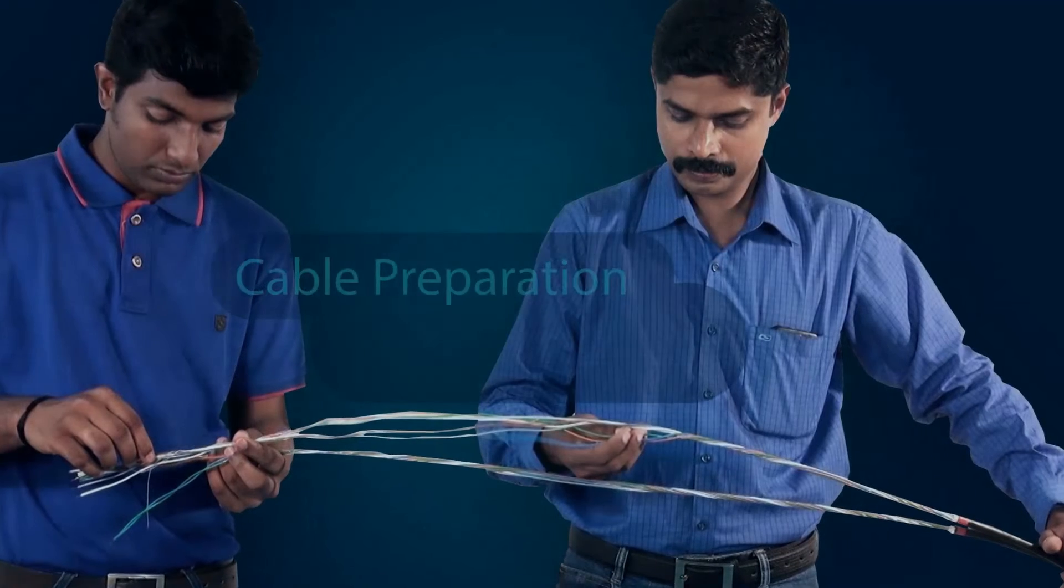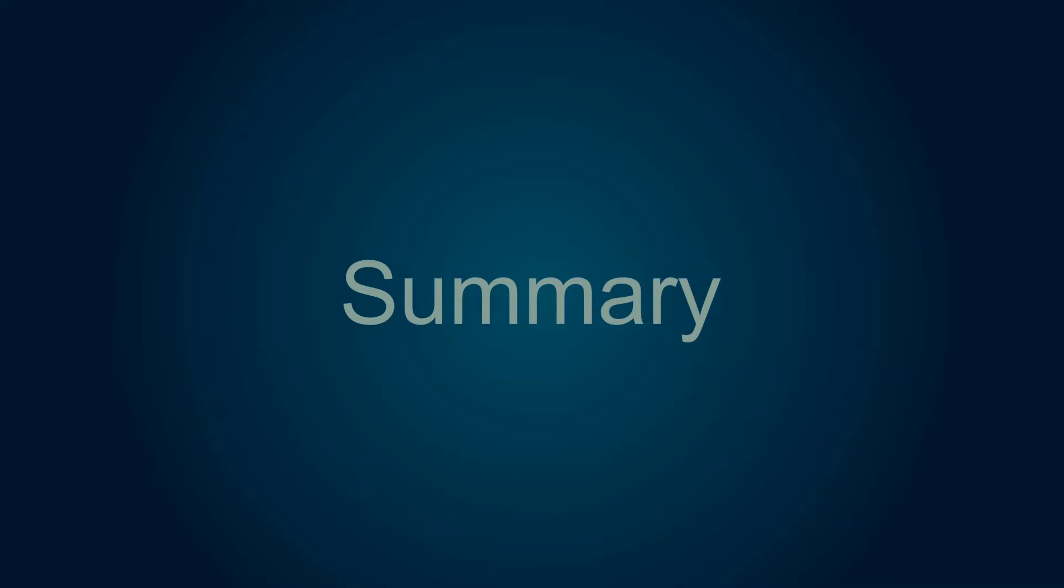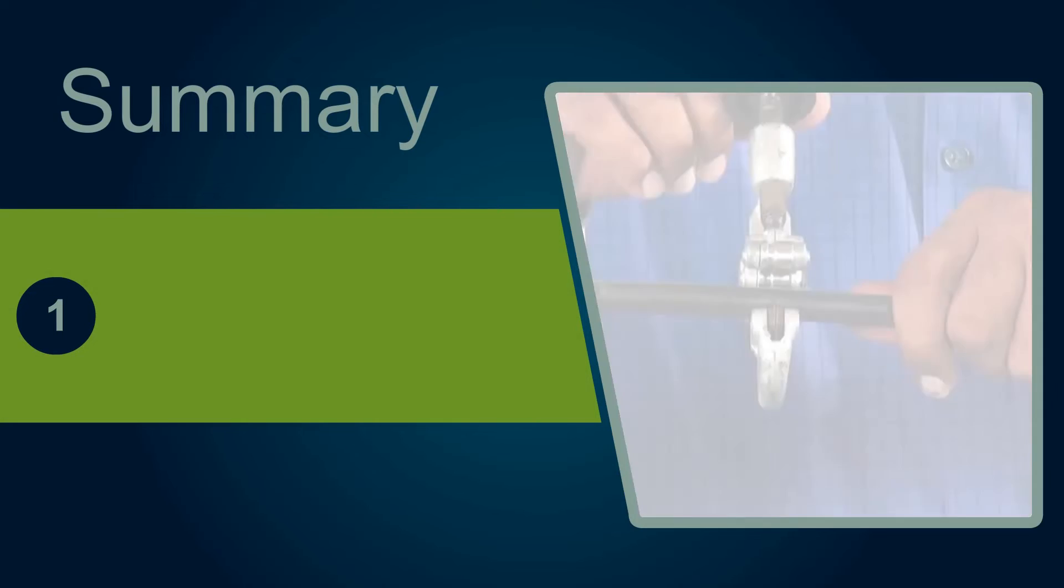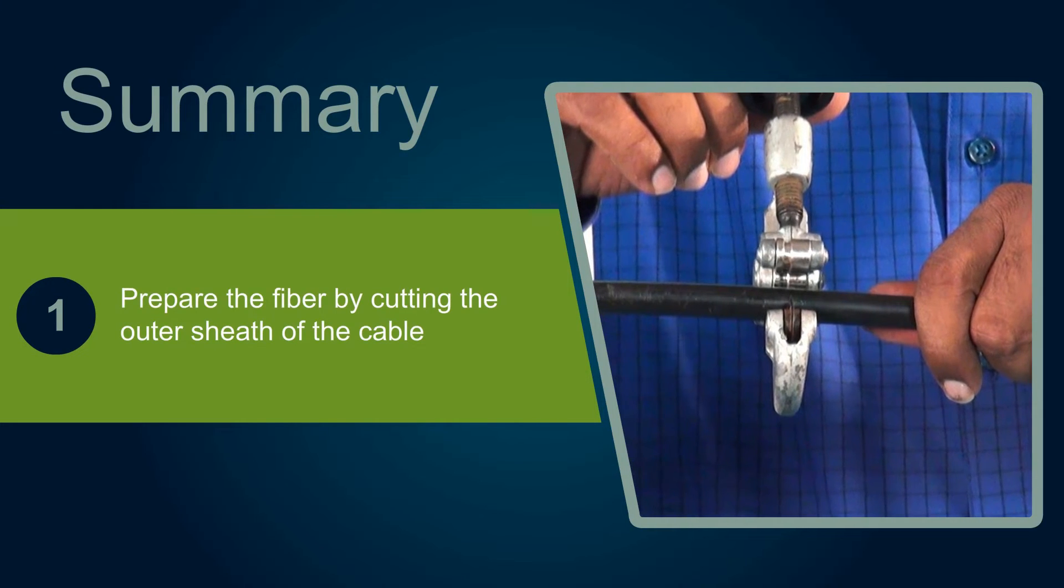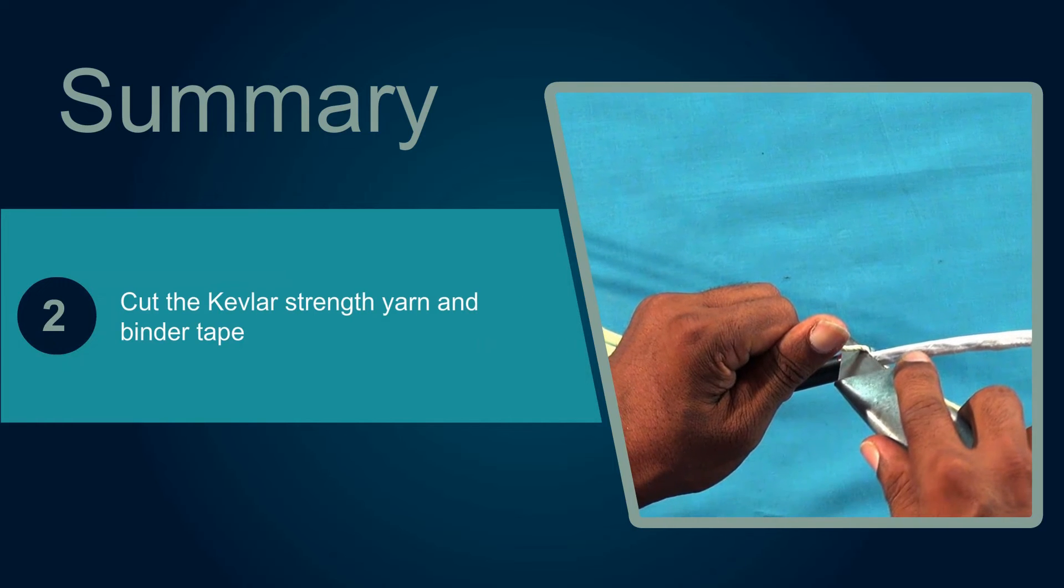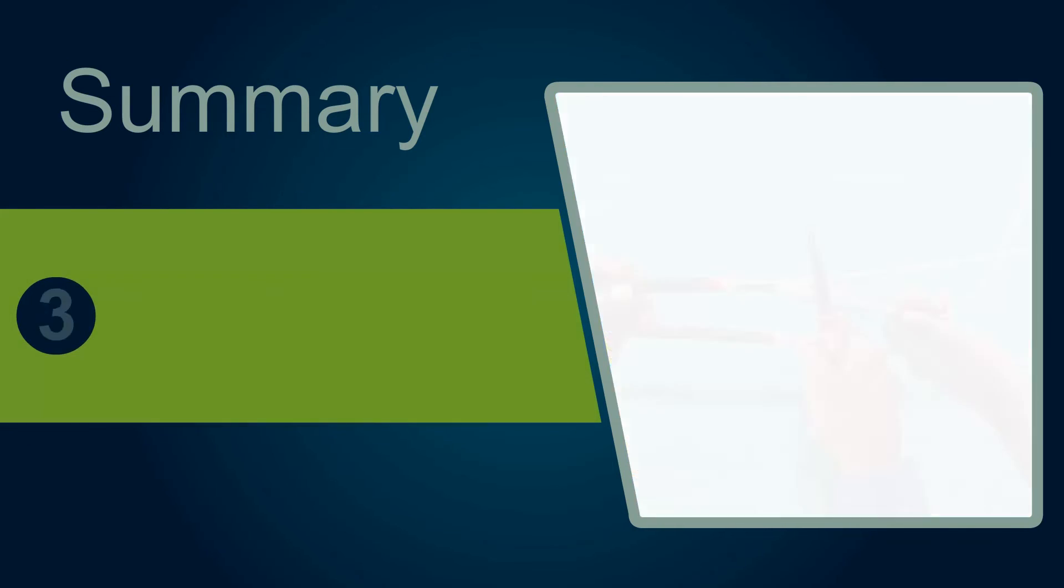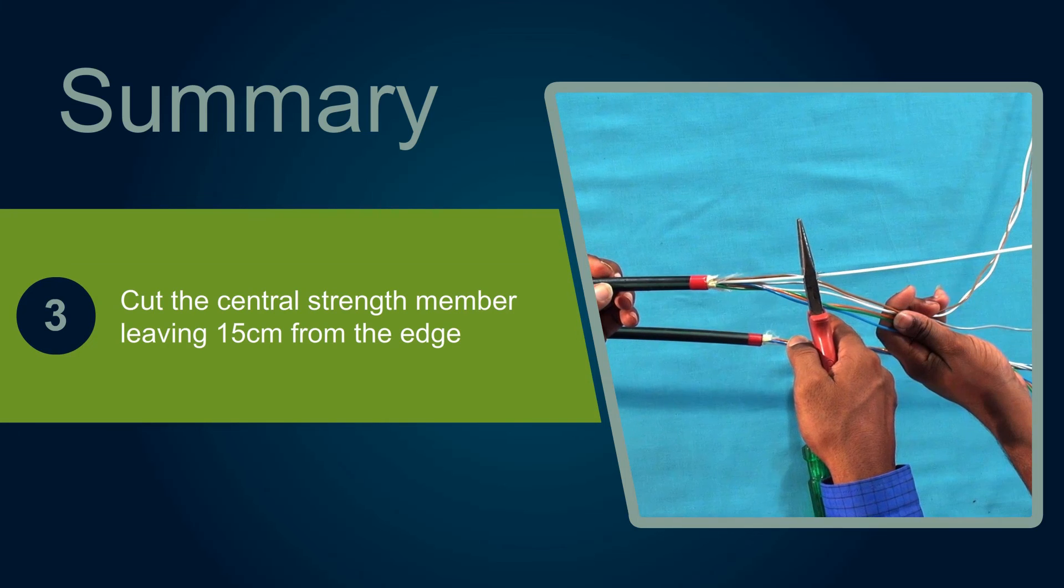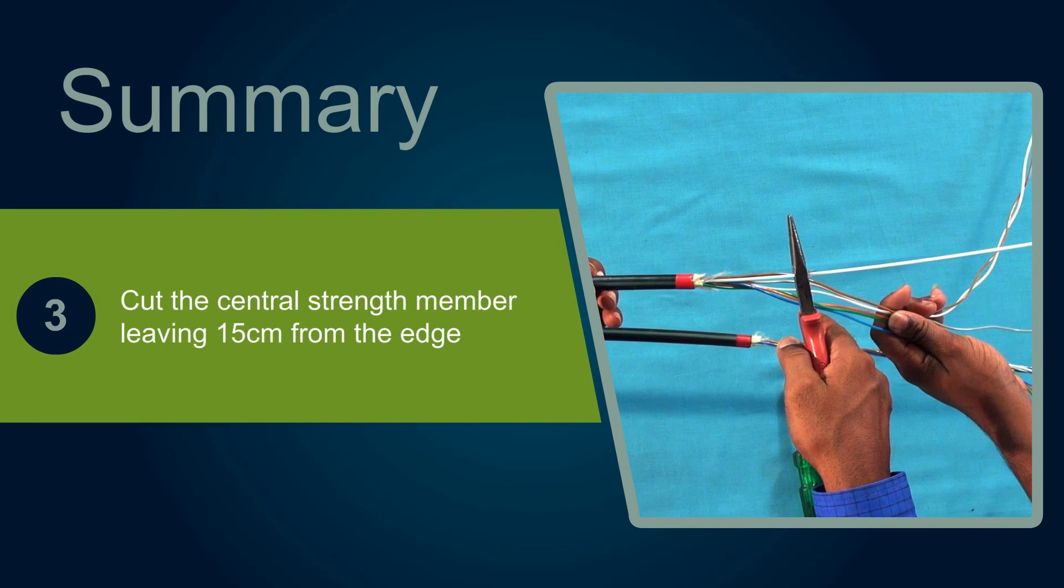With that, we have come to the end of this session. Let's now recall the key points. Prepare the fiber by cutting the outer sheath of the cable. Cut the Kevlar strength yarn and binder tape. Cut the central strength member leaving 15 cm from the edge.